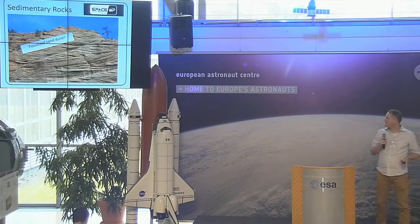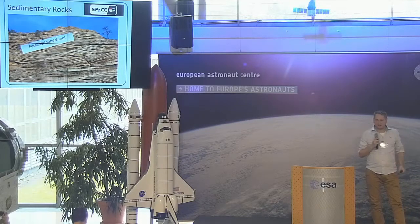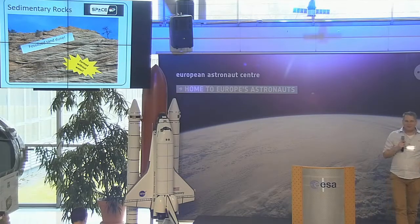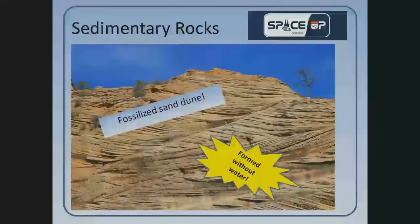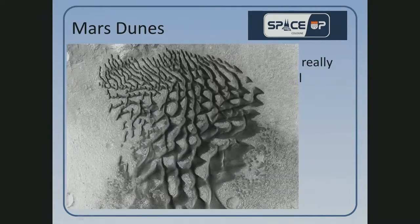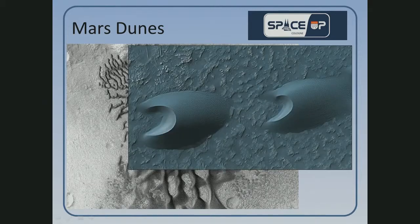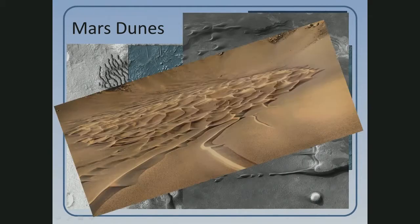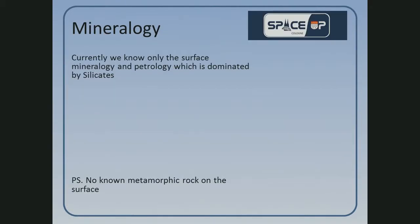Is this being formed by water? No, it isn't. This is an old sand dune - formed without water. Wind was the transporter of the sediments. We know that dunes exist on Mars. I personally like these features the most - they are brilliant and you can find them anywhere on Mars.